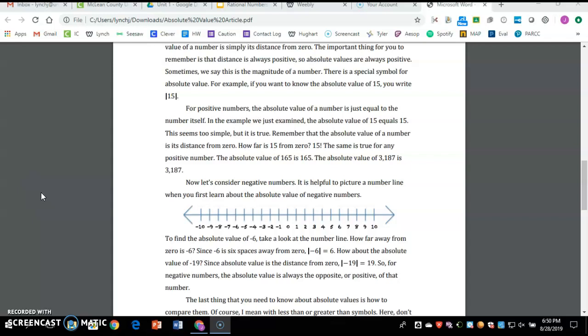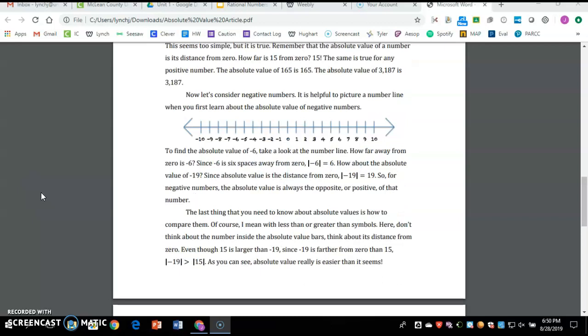Now let's consider negative numbers. It is helpful to picture a number line when you first learn about the absolute value of negative numbers. So you got the number line right there. They've got zero in the middle, one through ten positive on the right, negative one through negative ten on the left.